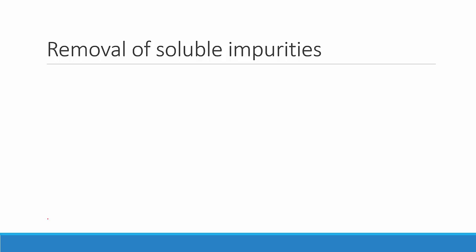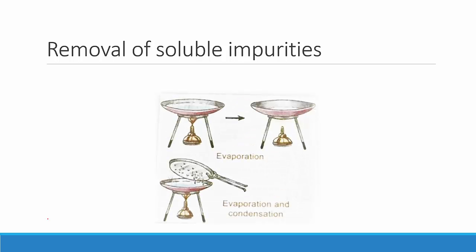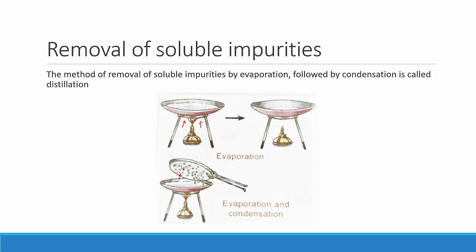Now let's look at how to remove soluble impurities. This is done by evaporation and condensation. If we take a shallow dish, fill it with water, and heat it from below, the water boils and evaporates. We take a very cold steel plate and keep it on top so that the steam and water vapors form small clean water droplets on it. This method of removing soluble impurities by evaporation followed by condensation is called distillation.